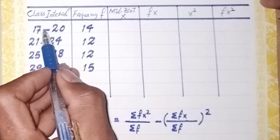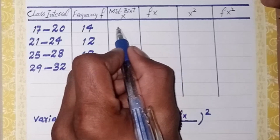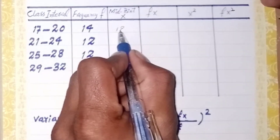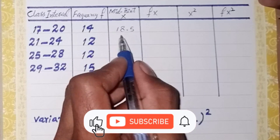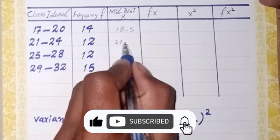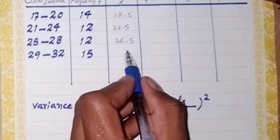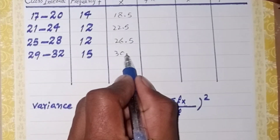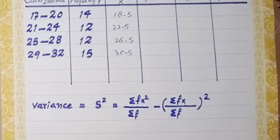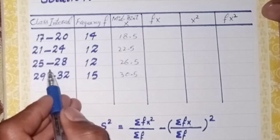For the first class interval, the midpoint is 18.5. For the second class interval, the midpoint is 22.5. For the last class interval, the midpoint is 30.5. Dear friends, we have found the midpoint column with the help of the class interval column.